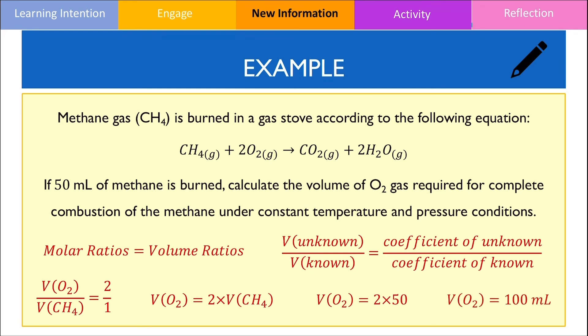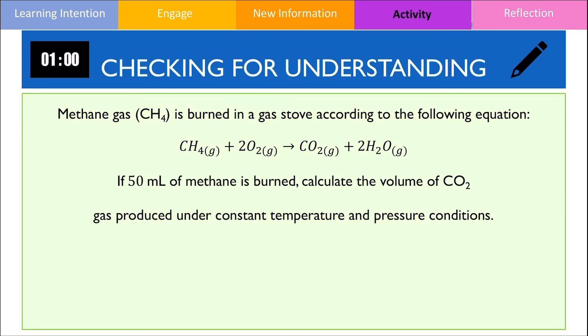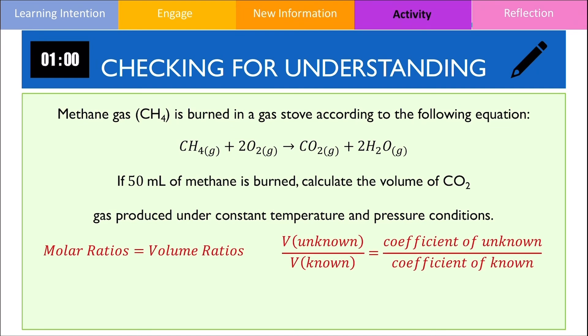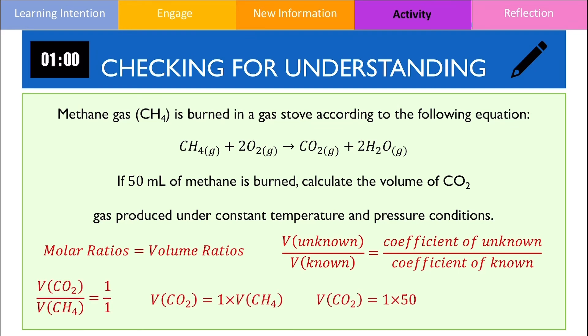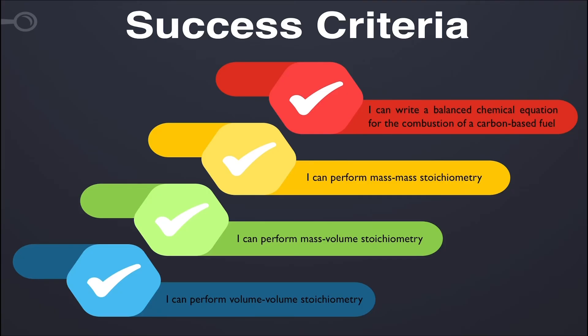I would now like you to answer the exact same problem, but this time calculate the volume of carbon dioxide produced. Give yourself a minute and then resume the video to check your answer. The volume of carbon dioxide gas produced should be the same volume as methane because there's a 1:1 ratio, hence the volume is also 50 mL. By now, you should be able to meet the success criteria in this video. If you found this video helpful, please give it a like. Thank you for watching and I'll see you in the next one.